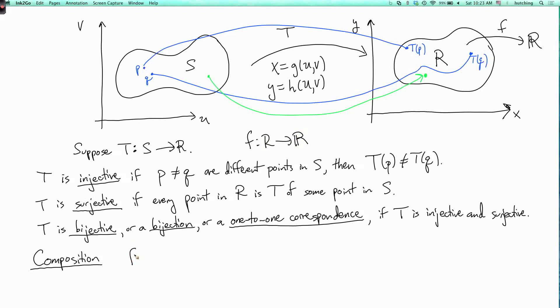So F composed with T. So this is a function from S to the real line. So F composed with T evaluated at some point u, v by definition is F of the point g of u, v comma h of u, v.